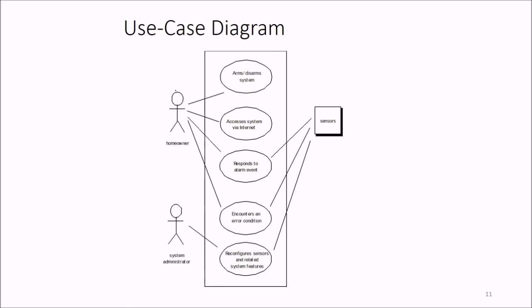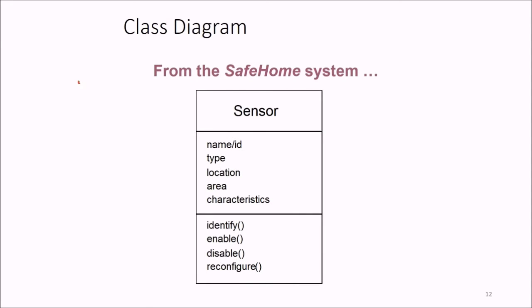This is an example of a use case diagram. You have a homeowner and system administrator. The homeowner will arm or stop the system, access the system via internet, respond to alarm events, and encounter error conditions. The system administrator can reconfigure the sensors and related system features.